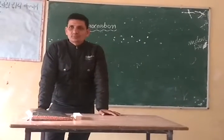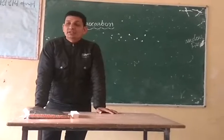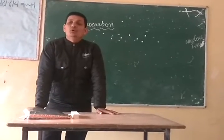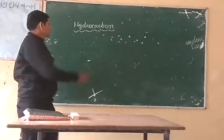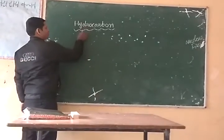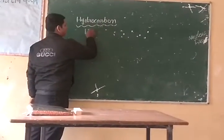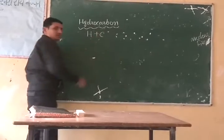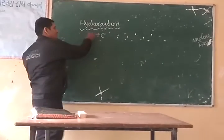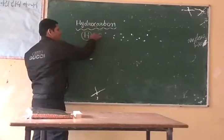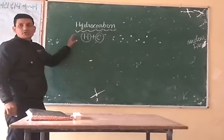Hello students, I am Shukam Tukla. Today I am telling you about hydrocarbon and its types. What is hydrocarbon? Hydro means hydrogen and carbon means carbon. So we can say a compound made up of hydrogen and carbon is called hydrocarbon.